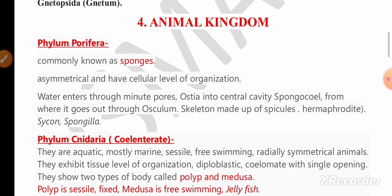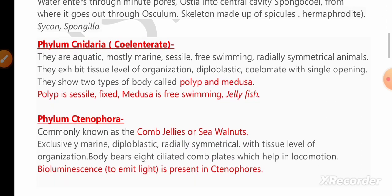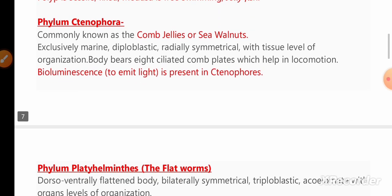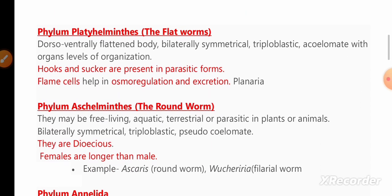For five marks, remember the characteristics of gymnosperms. Remember about mycorrhiza and coralloid roots in gymnosperms. In the fourth chapter, Animal Kingdom, remember the points of Phylum Porifera, Phylum Cnidaria, and the two types of body forms — polyp and medusa — which are very important.